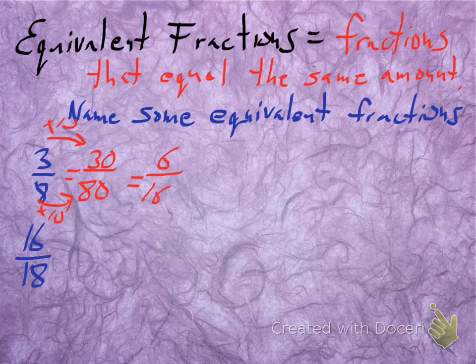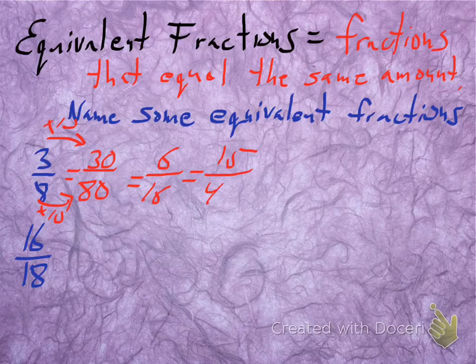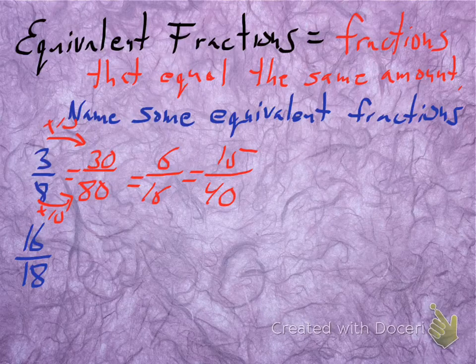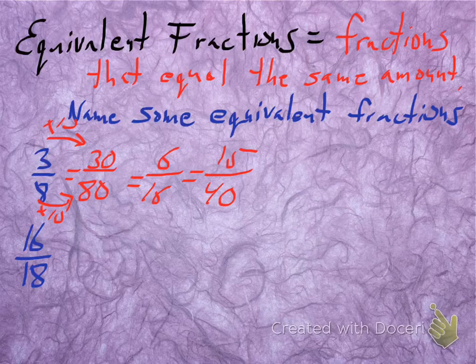What if I multiplied by 5? 15 over 40. All of these are equivalent fractions. They're all equal to the same amount. If you took a pie and broke it into 8 pieces, 3/8 is the same as breaking a pie into 40 pieces and taking 15 of them. The same thing works on the bottom example.